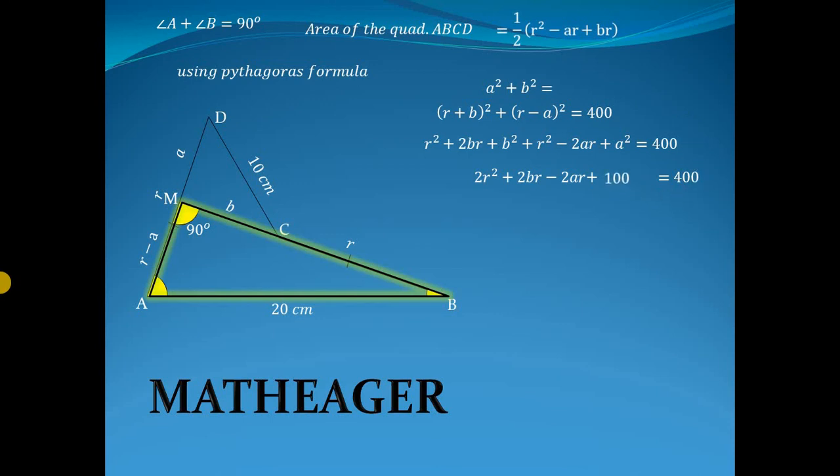So 400 minus 100 is 300, and we can factor out 2 from r squared plus 2br minus 2ar. We get r squared plus br minus ar equals 150.